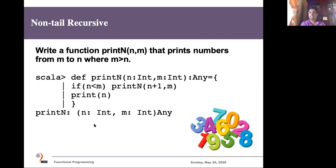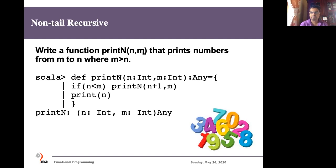Now let's look at non-tail recursive functions, where the recursion is not at the last statement — maybe at the beginning or somewhere in the middle. To understand how it works, let's implement a function called 'printN' that prints numbers from n to m. For example, if we give parameters five and ten, it should print numbers from ten down to five. I define the function in Scala with two numbers n and m, assuming m is greater than n, returning nothing.